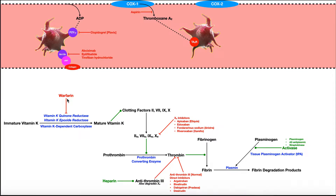Now what allows blood to clot? We need these proteins that are called clotting factors. Clotting factors are proteins that are made and released into the blood by the liver. So they're always circulating in your blood, but they're released by the liver in an inactive form. And then whenever there's an injury, the clotting factors should become active. We know the clotting factors are inactive because all that's designated is a Roman numeral that defines which clotting factor we're talking about.